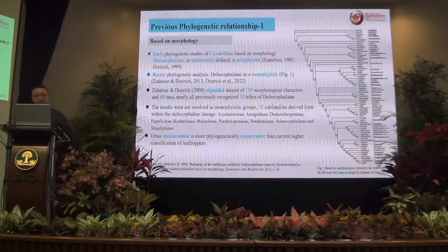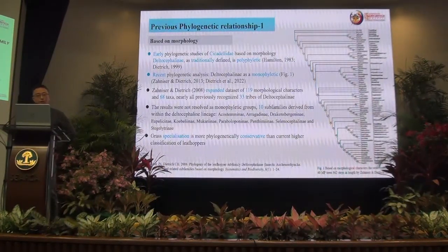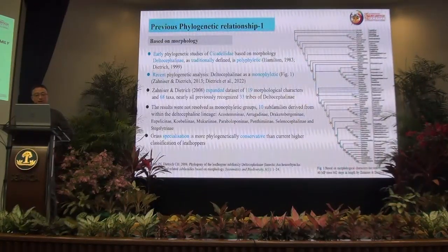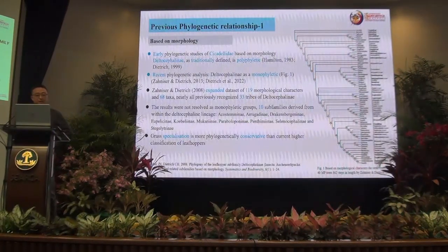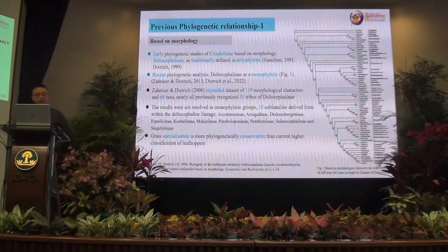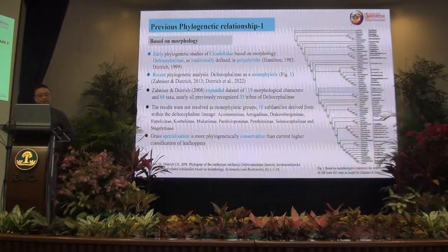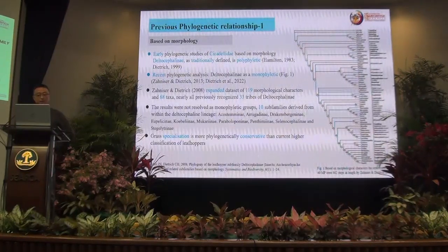De Hamshire's representation in 2013 showed Deltocephalinae and related lineages. Deltocephalinae's status depends on the date pathogenesis. Combined datasets were applied, with datasets of 19 taxa. The result was not resolved as a monophyletic group. The subfamily is derived from the Deltocephalinae lineage. Grass specialization is more phylogenetically conservative than the current higher classification suggests.